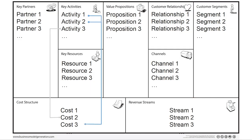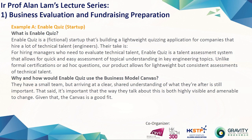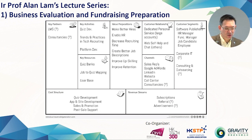I would like to give you some examples. Example A is about a startup called Enable Chris. This project is a service provider who provides some lightweight Chris application for companies who would like to hire people — more specifically for engineers and technical talent. They tried to use this business model canvas to evaluate their business. Alex came up with this example. For the value proposition, they would like to make better hires.